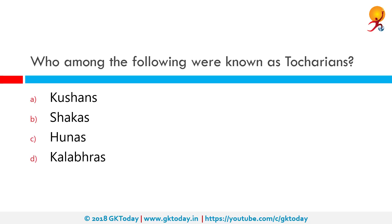Who among the following were known as Tocharians? Tocharians were Indo-European people who inhabited the medieval oasis city-states on the northern edge of the Tarim Basin, which is modern-day China. These are often identified by modern scholars using Chinese historical accounts. These are the people who founded the Kushan Empire. So the answer is option A, Kushans.